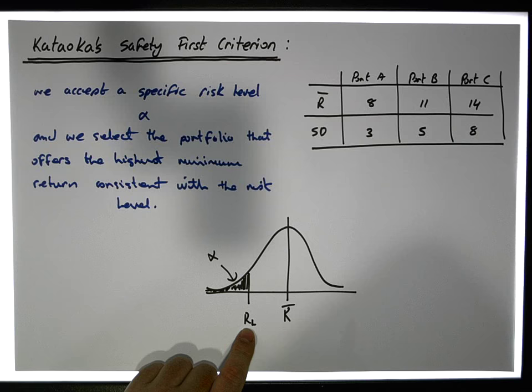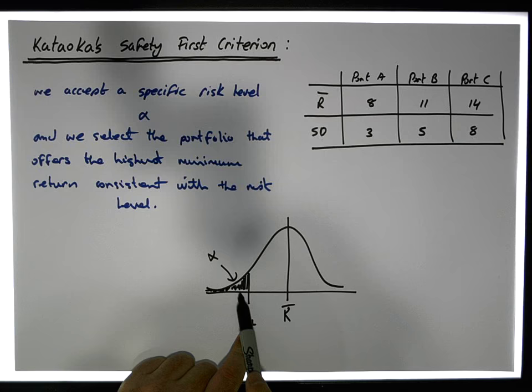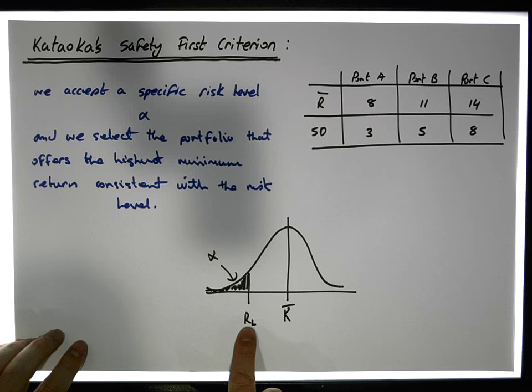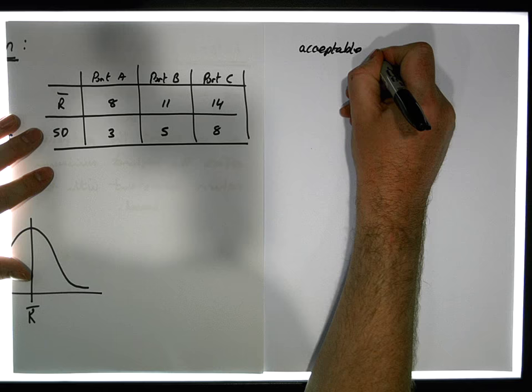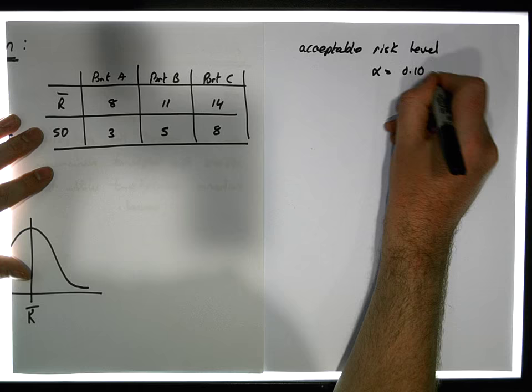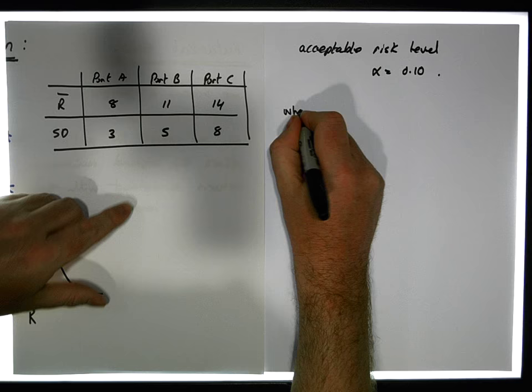Let's choose portfolio A and calculate the minimum return level RL that goes along with a particular alpha. Let's say for argument's sake that the acceptable risk level is alpha equal to 10%, or 0.10.